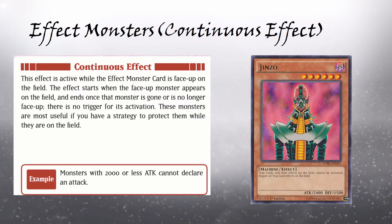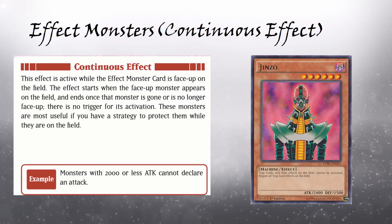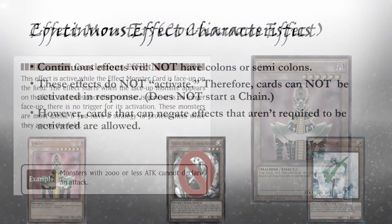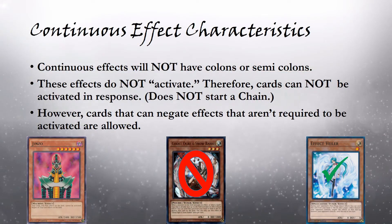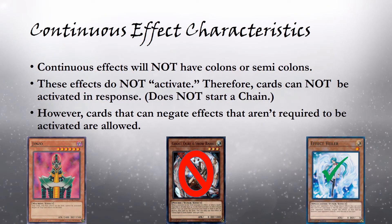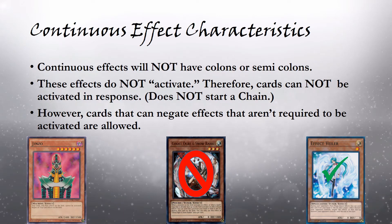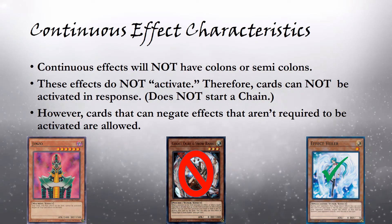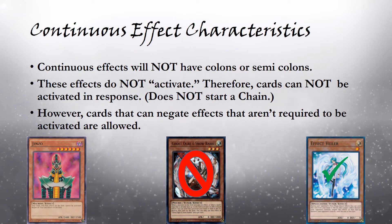This means that as long as Jinzo is face-up on the field, whether in attack or defense position, trap cards of both players cannot be activated, and any face-up trap cards with any active effects will have their effect negated. Below, we have some characteristics of Continuous Effects. Continuous Effects will not have colons or semicolons. These effects do not activate; therefore, cards cannot be activated in response. In other words, it does not start a chain. However, cards that can negate effects that aren't required to be activated are allowed.